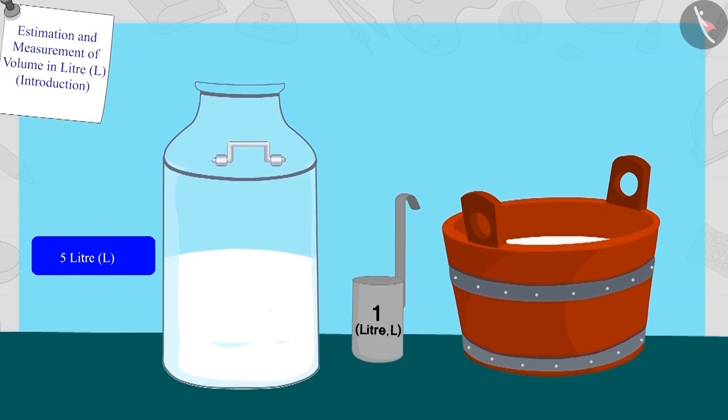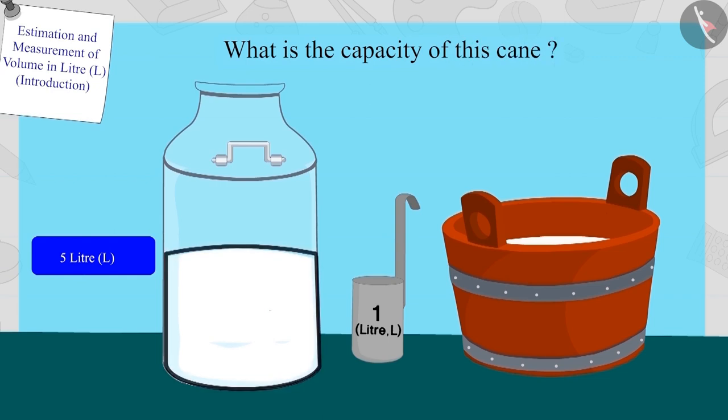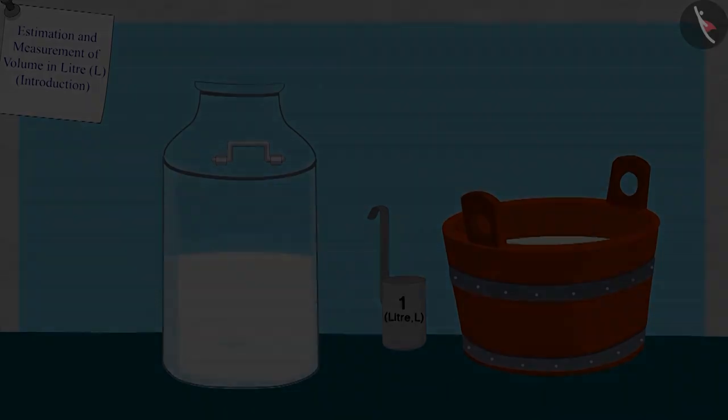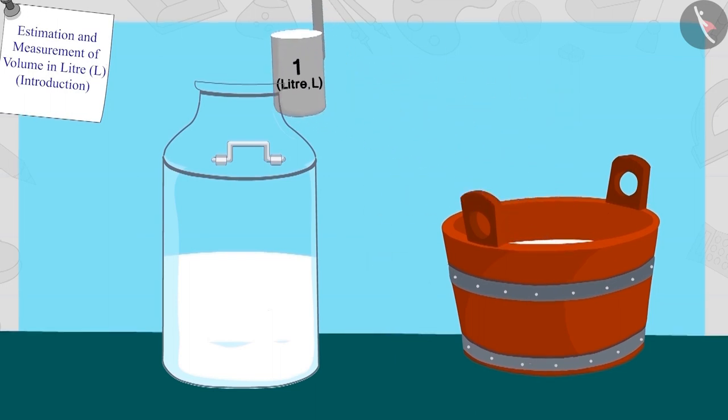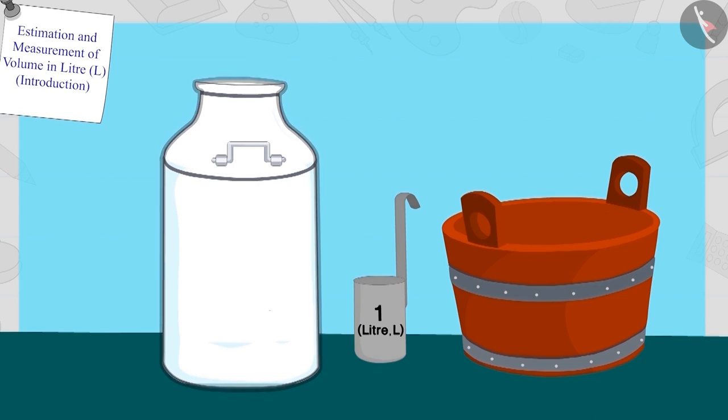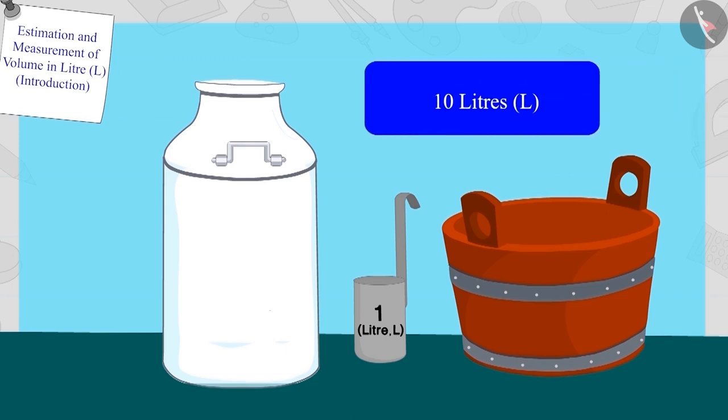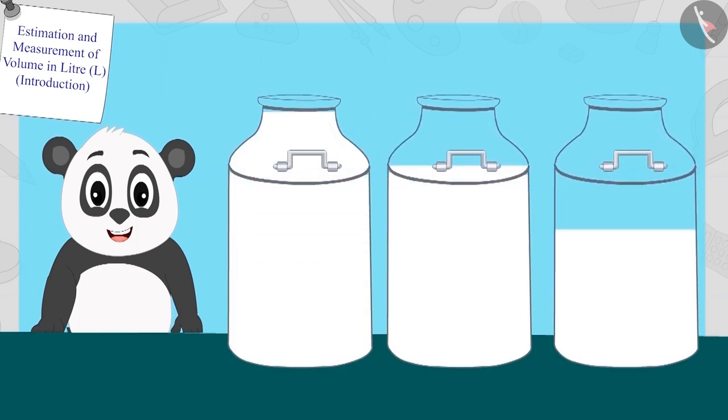What is the capacity of this can? If required, you can pause this video and find the answer. Well done, your answer is absolutely correct! After pouring six, seven, eight, nine, and ten liters of milk, the can was fully filled. Hence, the capacity of this can is 10 liters. Now Golu put 10-liter stickers on these cans.